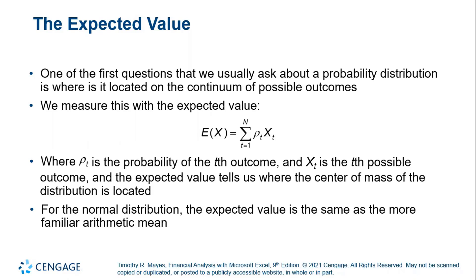Expected value is the sum of the probability times the outcomes. In that equation, rho-t is the probability of the t-th outcome, and s-t is the t-th possible outcome, and the expected value tells us where the center of mass of the distribution is located.